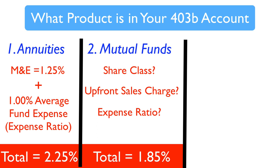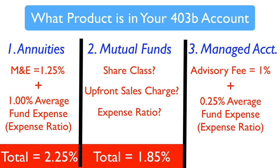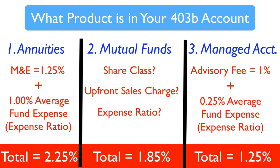The third product is a managed account — this might be at a company like Aspire or Security Benefit — where an advisor manages a portfolio for you and may charge around 1%. Hopefully they'll use much lower cost funds, like Vanguard, Fidelity, or Schwab funds, adding perhaps another quarter percent in fund expenses. So for a managed account, a typical all-in fee might be around one and a quarter percent. Comparing all three: variable annuities average around two and a quarter percent, mutual funds around 1.85% in C shares, and managed accounts around one and a quarter percent.